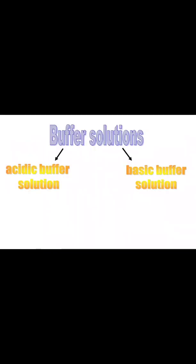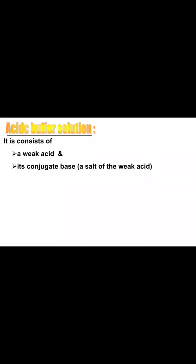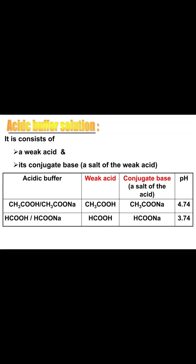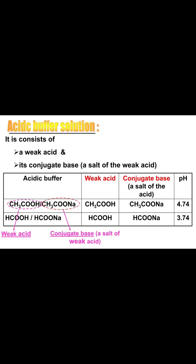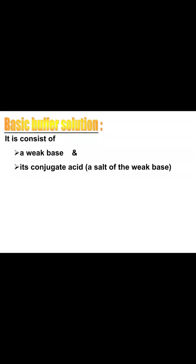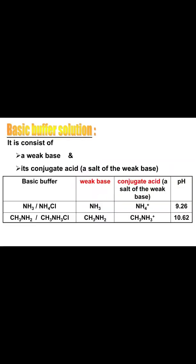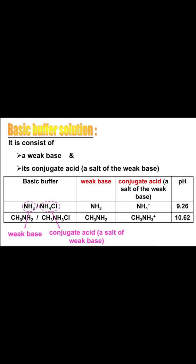Now let's study the components of acidic buffer and alkaline buffer. For the acidic buffer, as discussed in example 1, it consists of a weak acid and its conjugate base, which is the salt of the weak acid. For example, the weak acid is ethanoic acid, while the salt of the weak acid is sodium ethanoate. For the alkaline buffer, it consists of a weak base and its conjugate acid, which is the salt of the weak base. For example, ammonia is the weak base, while ammonium chloride is the salt of the weak base.